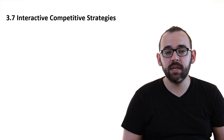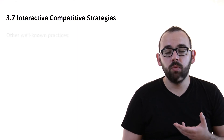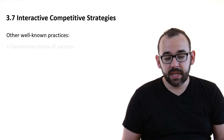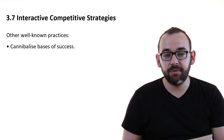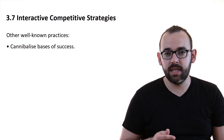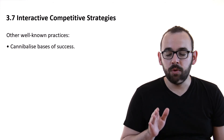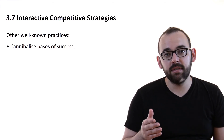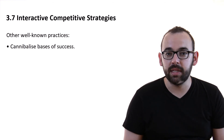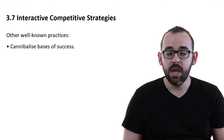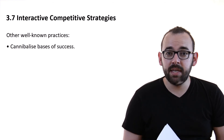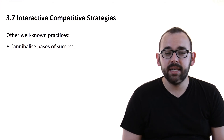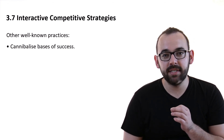For the last part of this video, I would like to discuss some other well-known practices when it comes to responding to competitors, especially a low-cost rival. First, sometimes companies have to cannibalize on the basis of their success. Imagine you are a company that has been successful for 30 years, doing things the way you have done them for 5 or 15 years, and you are still somewhat successful because you didn't have too many competitors. All of a sudden, a competitor arrives who does things differently, offering higher benefits or lower costs. Sometimes what companies have to do is purposely cannibalize what they have been successful with.